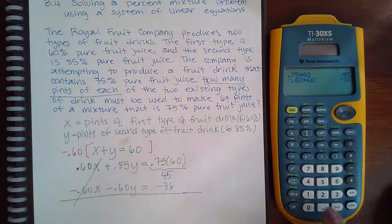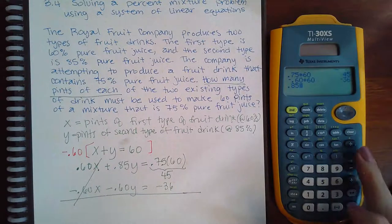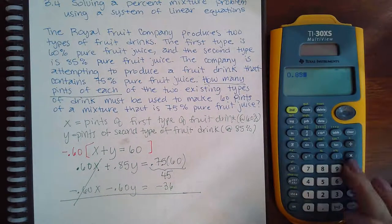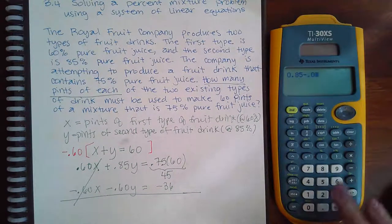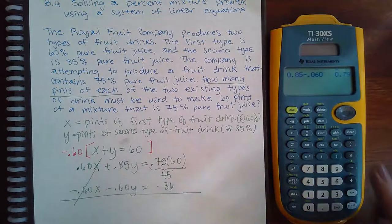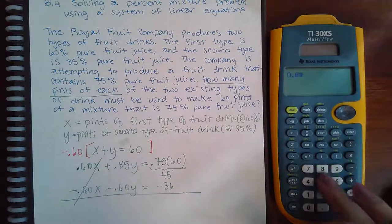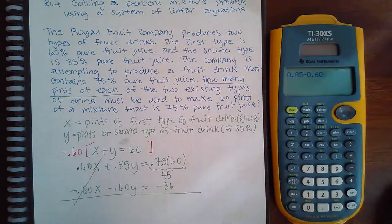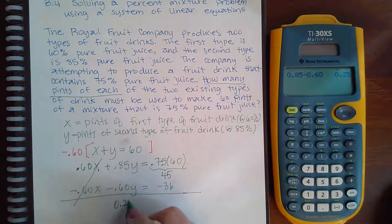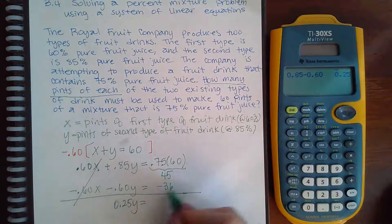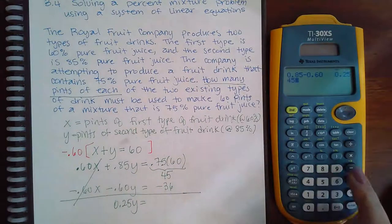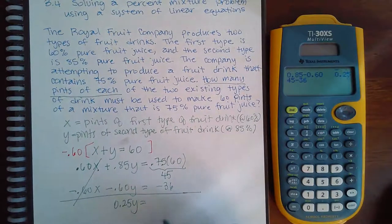0.85 minus 0.60 is going to be positive 0.25y, and then 45 minus 36 is going to equal 9.